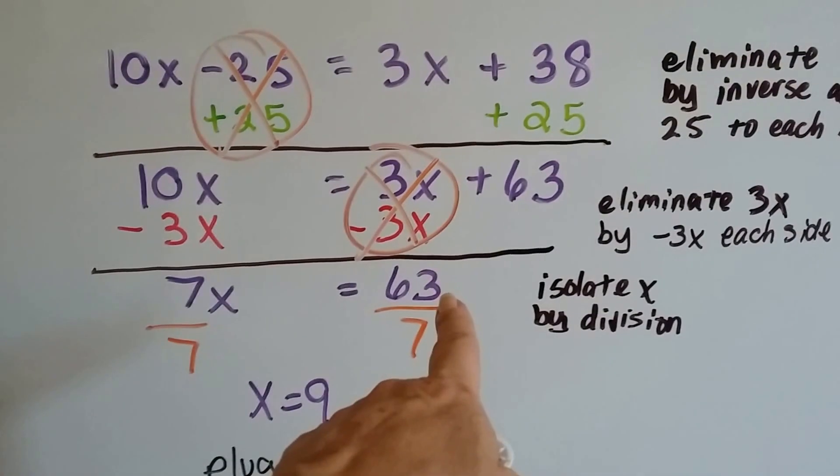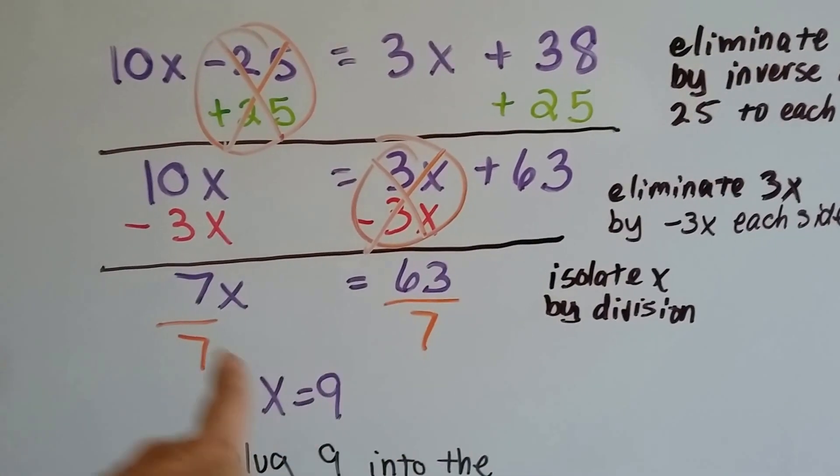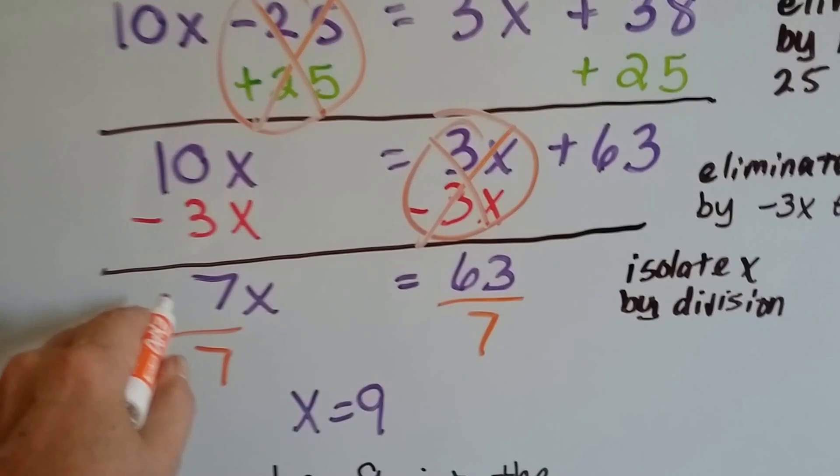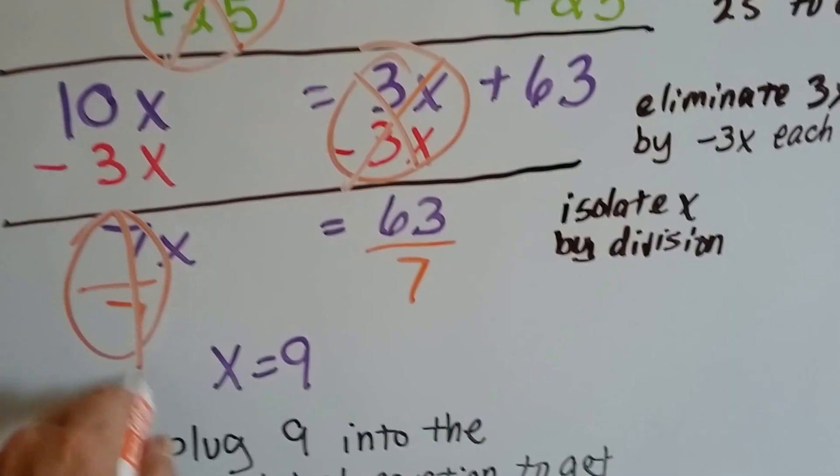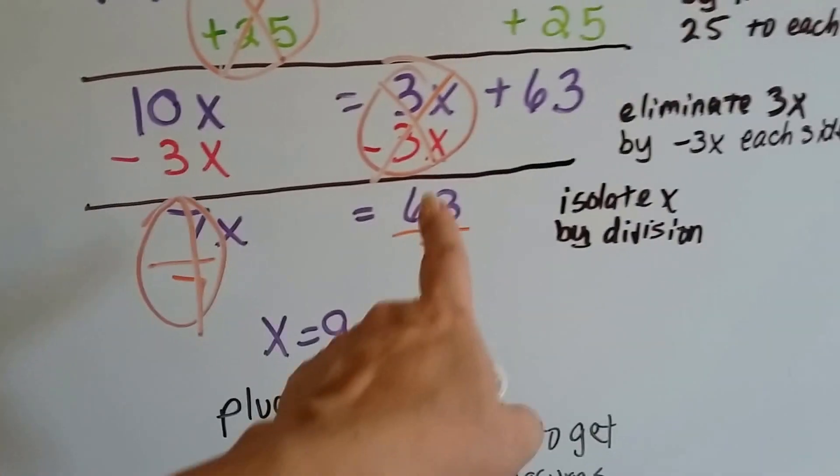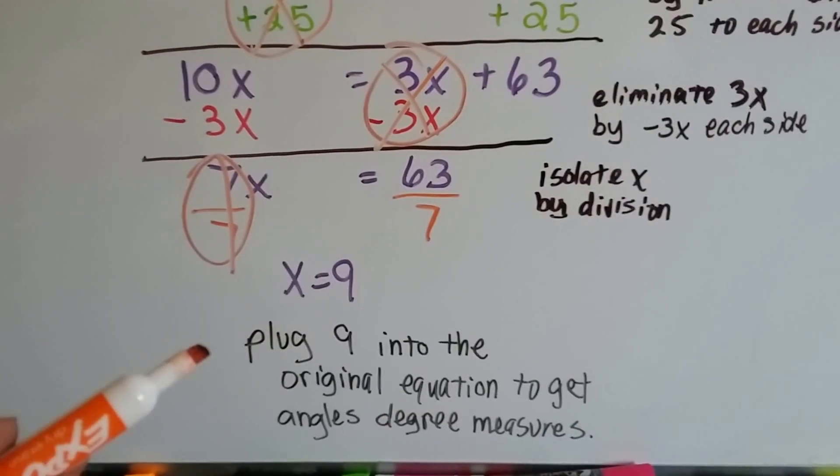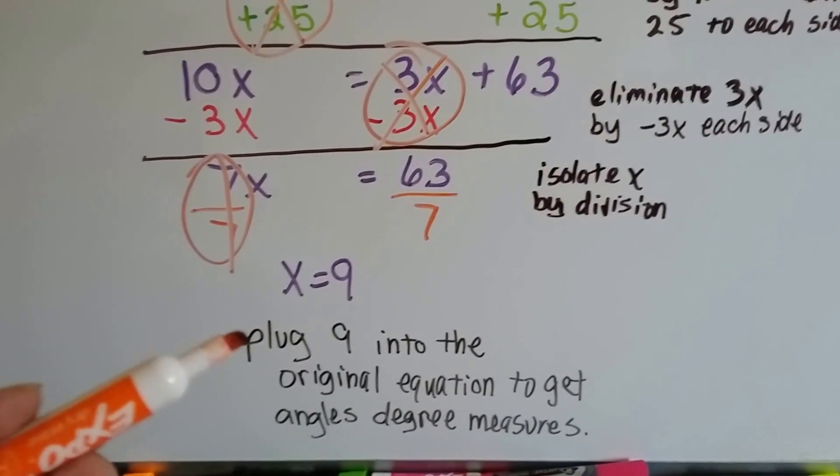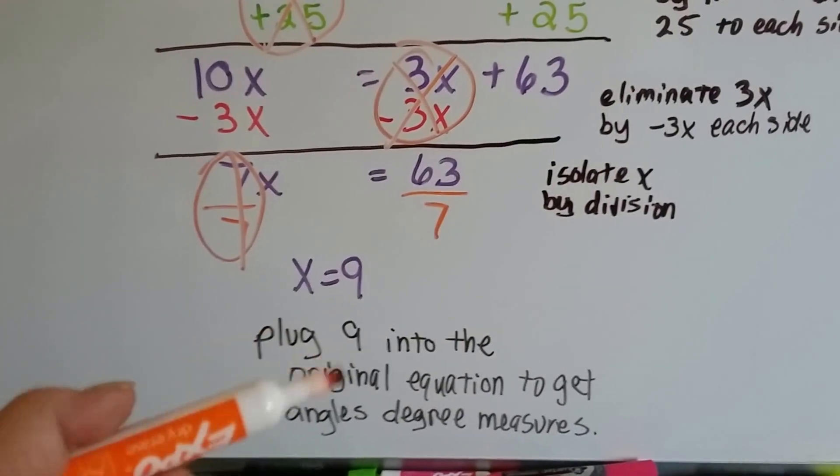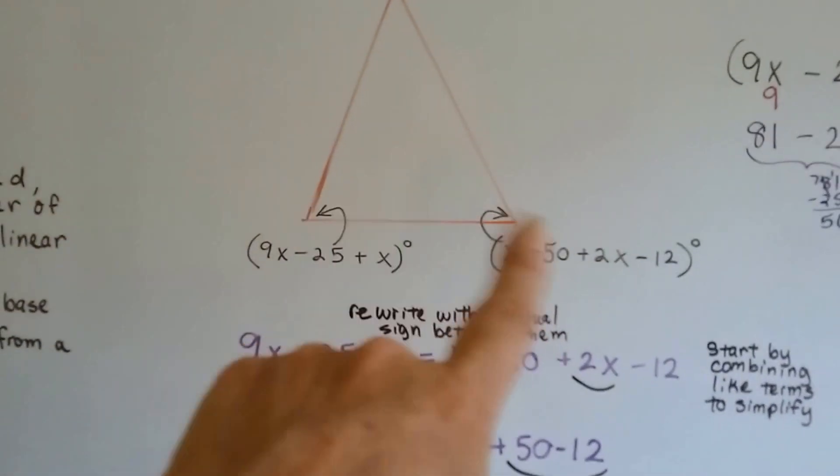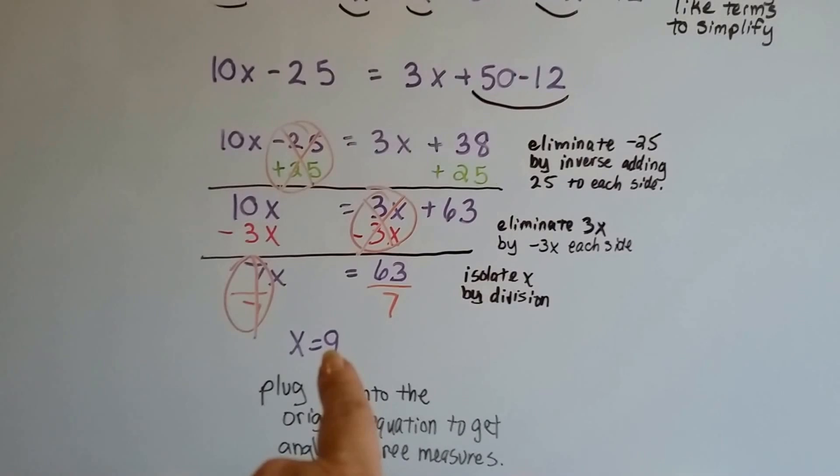Now we drop down our 63. We divide both sides by 7 to make our friend the invisible 1, 1x. And 1x is equal to 9, because 7 times 9 is 63. Now we're not done. We have to plug that 9 into the original equation to get the angles, the degree measures.